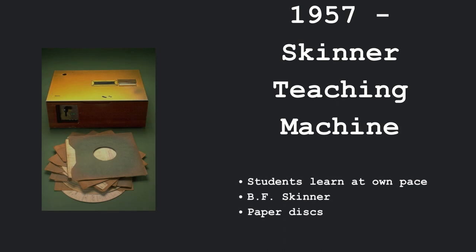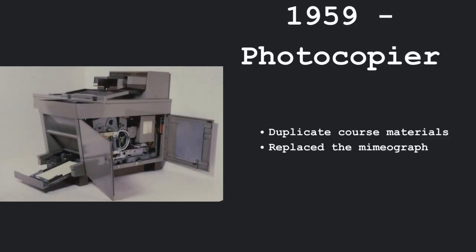In 1957, the Skinner teaching machine was invented by behavioral psychologist B.F. Skinner. With this machine, students could learn at their own pace and questions and responses were written on paper discs. In 1959, the photocopier was invented and it allowed teachers and other educators to duplicate course materials, and it also replaced the mimeograph.